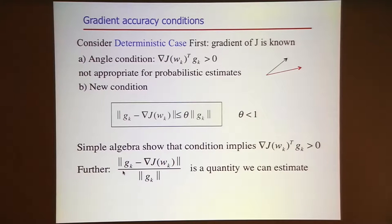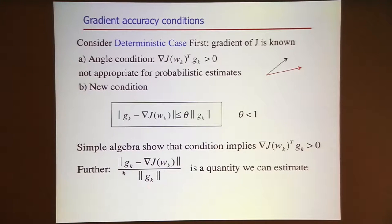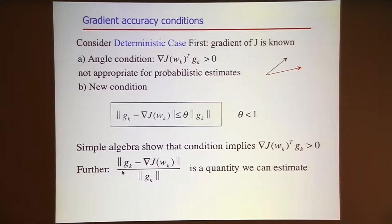This quantity is now one that I'm going to be able to measure. If you bring the norm of g to the denominator and look at that quantity, the true gradient is the expected value of the stochastic gradient. So I'm going to be able to do statistical estimates of this quantity and guarantee that I produce a descent direction sufficiently often to get to the solution.